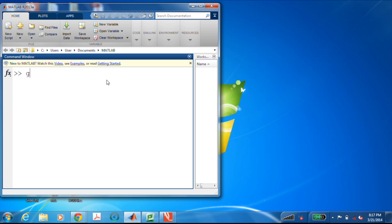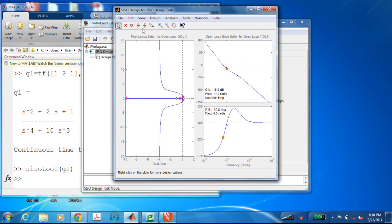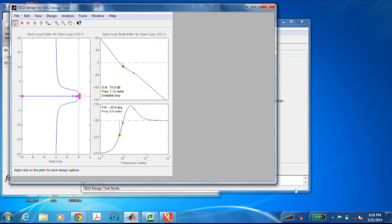So with all that, let's go to MATLAB. So here's our loop transfer function. I'll call it GL. And it's TF. We'll use the transfer function command. 1, 2, 1 for the numerator. And 1, 10, 0, 0, 0 for the denominator. And there it is. So now let's just use CISO tool. And voila, it defaults to showing me a root locus and a Bode plot. How convenient, considering that's what we just did by sketching by hand.